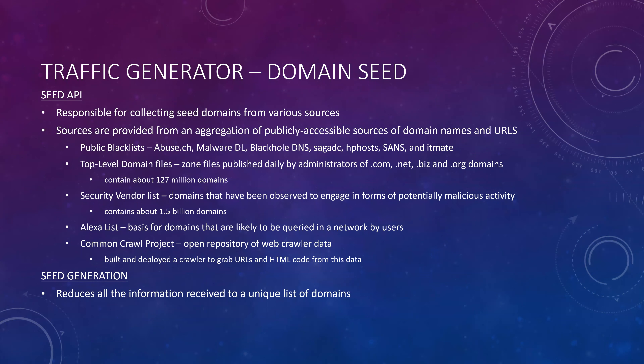Each one of these zone files contains about 127 million domains. They also went to a security vendor that had domains observed to engage in potentially malicious activity — about 1.5 billion domains. They used the Alexa list for domains likely to be queried by users, and tapped into the Common Crawl project, an open repository of web crawler data. They built and deployed a crawler to grab URLs and HTML code. All of this was fed into the seed generation piece, which reduces everything down to a unique list of domains by removing duplicates.